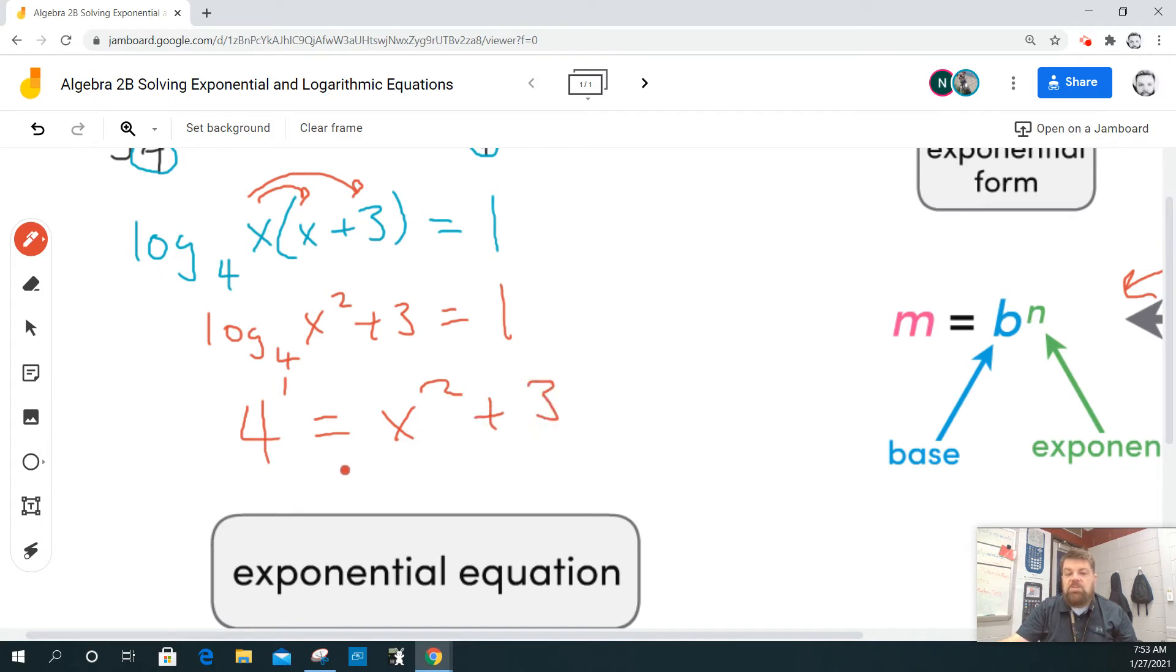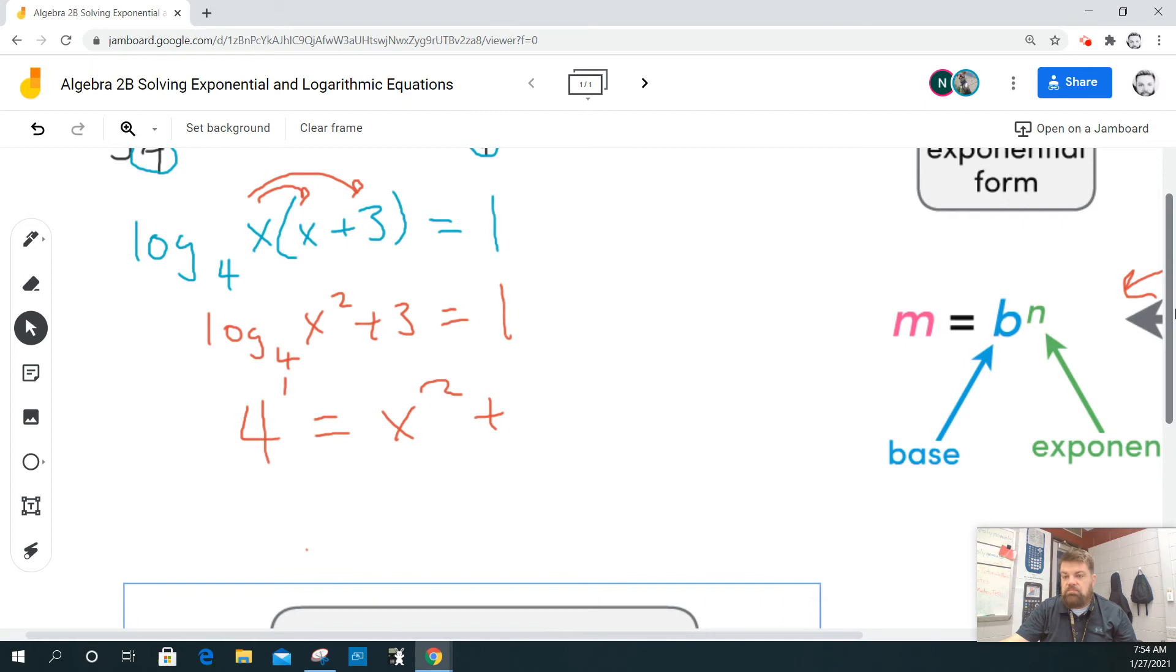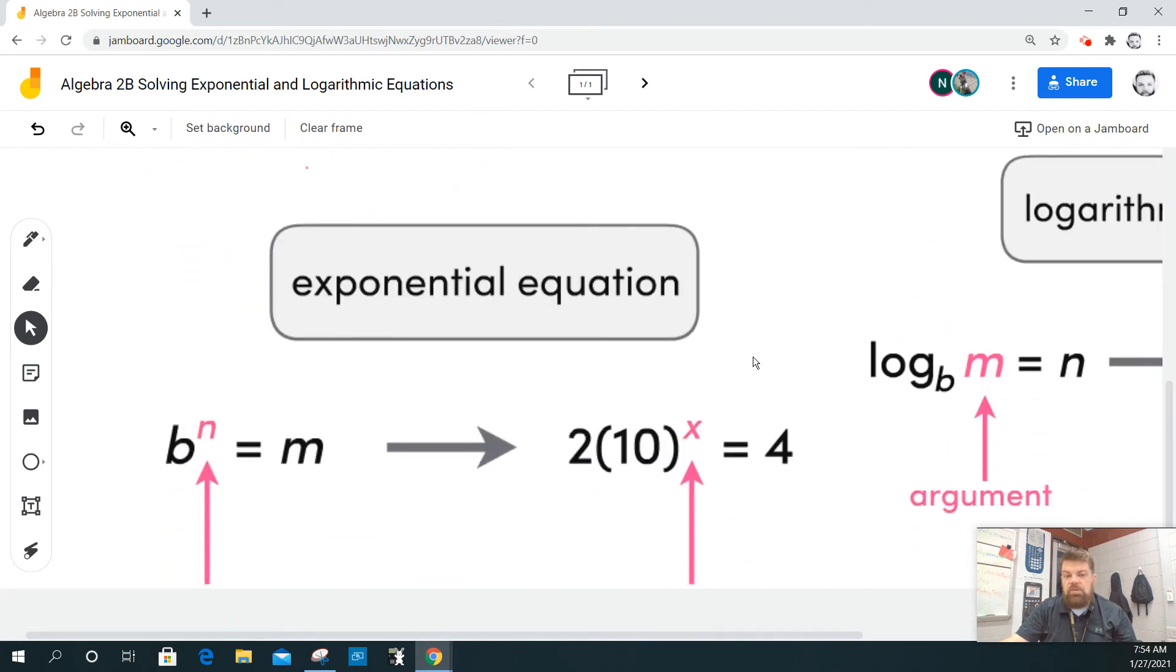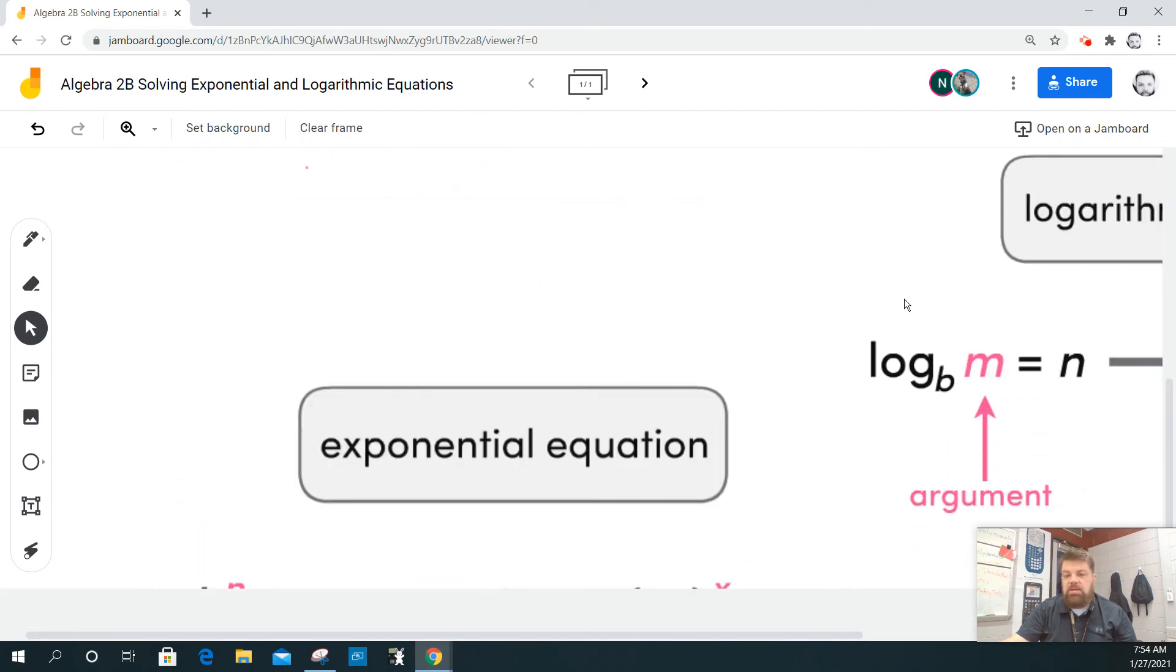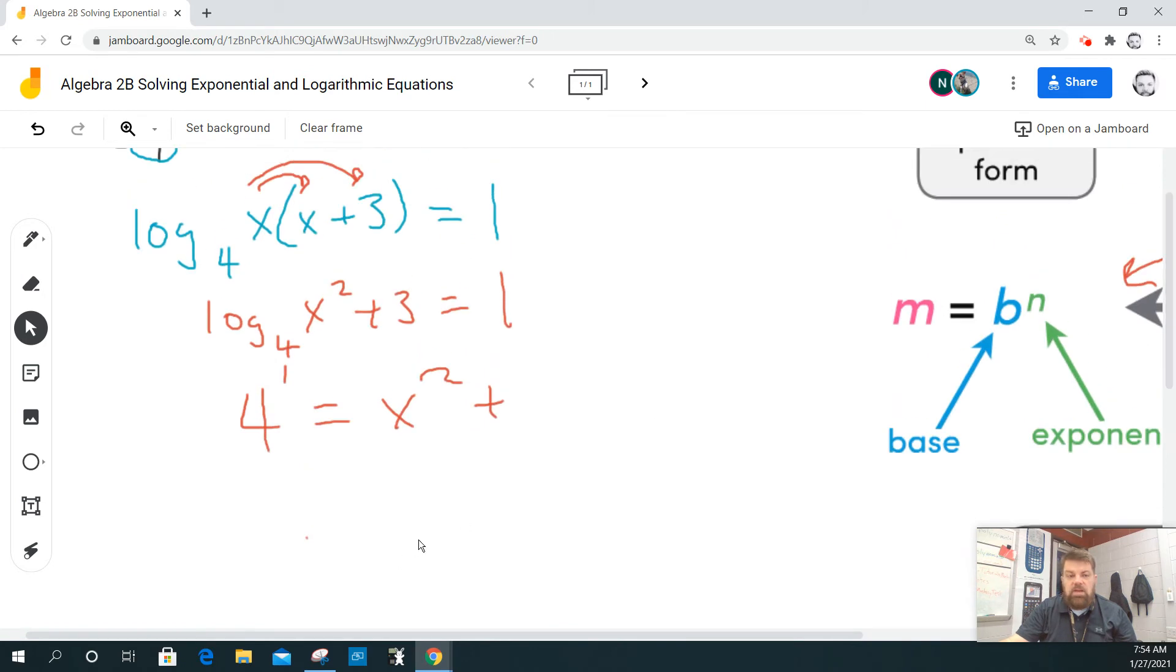So, now I can solve this equation. 4 to the 1 is just 4. Let me move this out of the way here. Let me move this down a little bit.